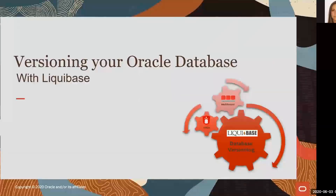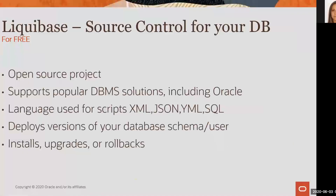The last component we need to have everything working is a database versioning tool. For my demo I've used Liquibase. Liquibase is an open source solution for database versioning. It works across various types of databases — not limited to Oracle — and supports various file formats to define database structure: XML, JSON, YAML, and SQL. In my example I've used SQL files. By integrating Liquibase into the overall code versioning management system and continuous integration platform, you can synchronize your database version with your actual application version.